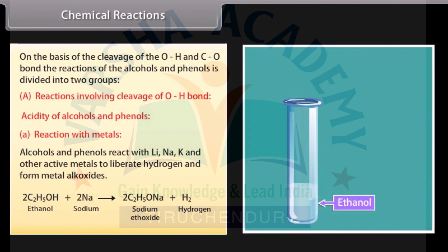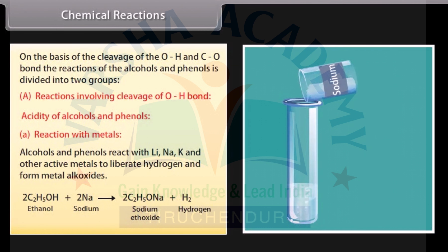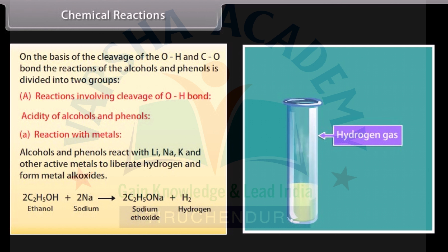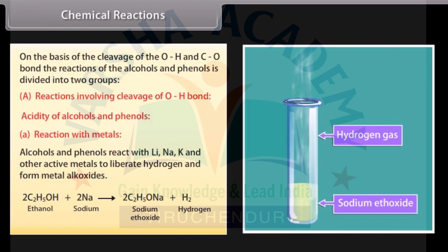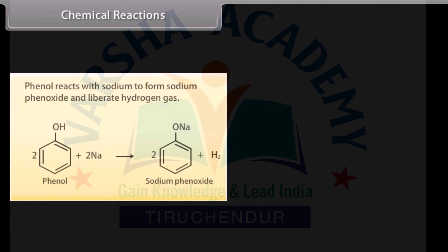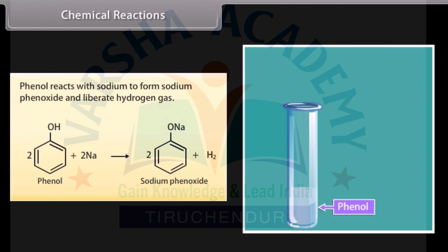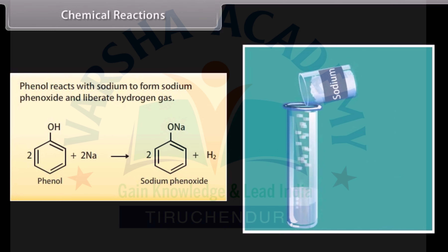Alcohols and phenols react with lithium, sodium, potassium, and other active metals to liberate hydrogen and form metal alkoxides. Phenol reacts with sodium to form sodium phenoxide and liberate hydrogen gas.